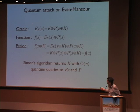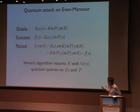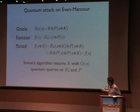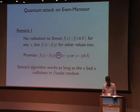How does it apply to Even-Mansour? We have access to the cryptographic oracle EK and to the permutation P. What you can do is build a function F(X), which is the XOR of EK and P. You can show with a two-line calculation that this function has a period which is exactly the secret key K. So if you run Simon's algorithm on this function, you will recover the key K. That's the idea.